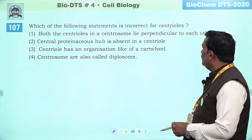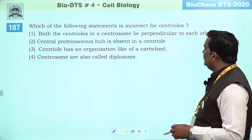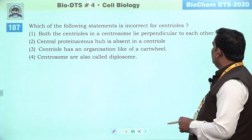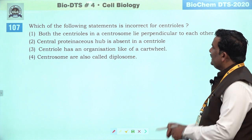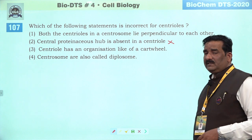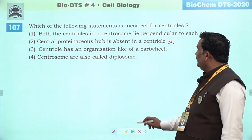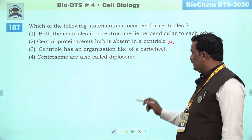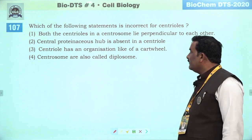Next question: which of the following statement is incorrect for centriole. Both the centrioles in centrosome lie perpendicular to each other — bilkul sahi hai. Central protein hub is absent in centriole — yeh galat ho gaya, kyunki centriole mein central hub toh hai, usse nine spokes attach hote hain. Humare wrong jo incorrect statement hai woh second hai. Second is the right answer.